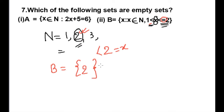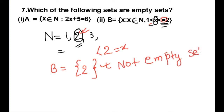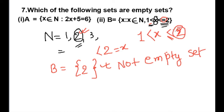So B = {2}. This is the set B, so this is not an empty set. x must be greater than 1 and less than or equal to 2 — the equal sign means we consider 2 as well. So x = 2, because 2 is greater than 1 and equal to 2. Let's see the next set.